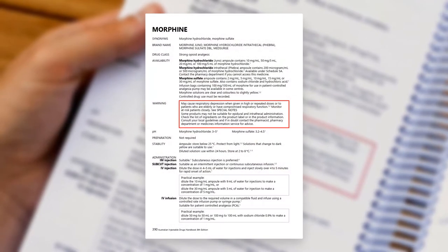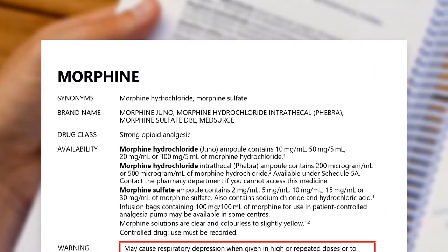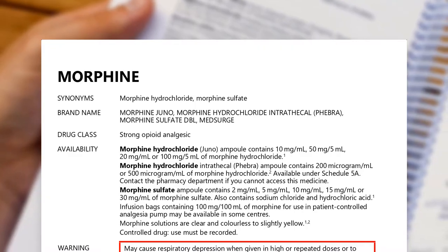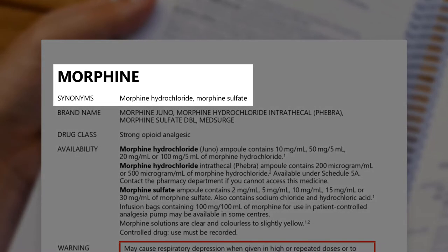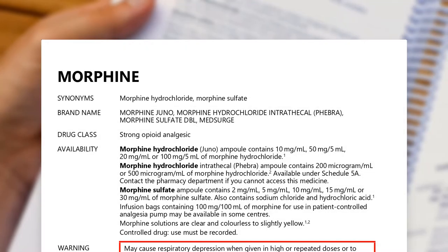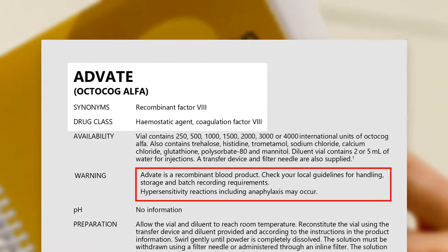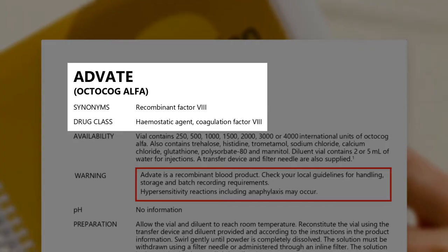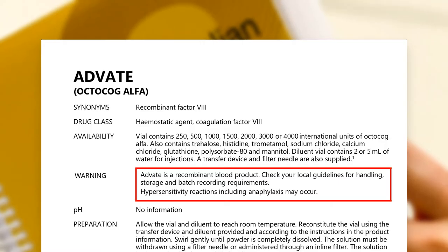The monographs are listed alphabetically by the active ingredient name. Sometimes more than one medicine is included in a monograph. For example, the morphine monograph includes information for two different salts of morphine: morphine sulfate and morphine hydrochloride. For some medicines, the monograph uses the brand name. Coagulation factors like Advate are listed by brand name, with the active ingredient in brackets, to make the monograph easier to find.